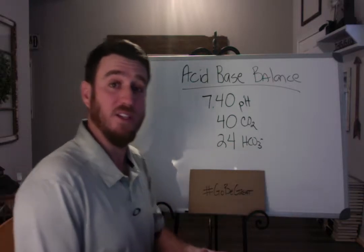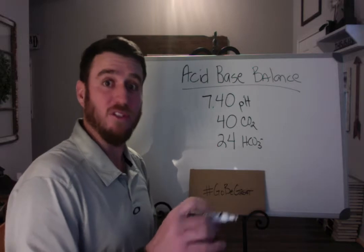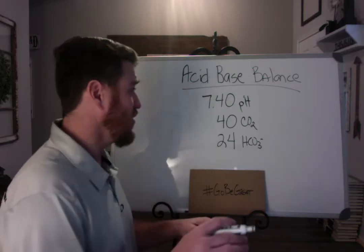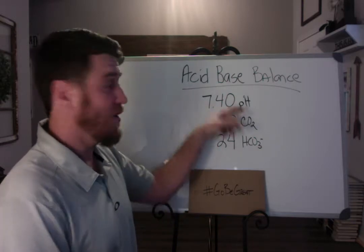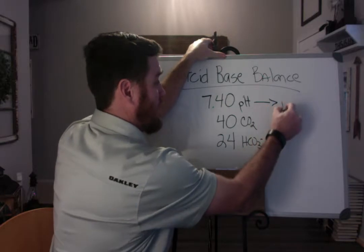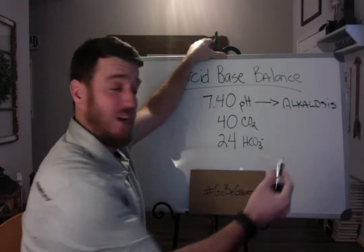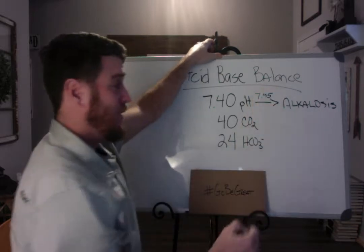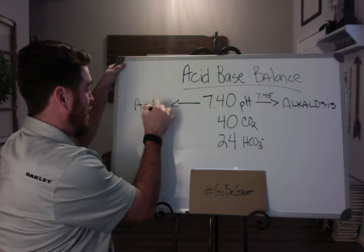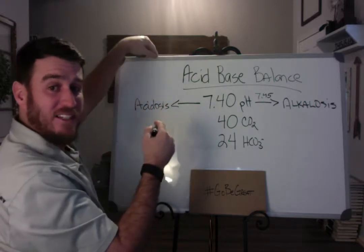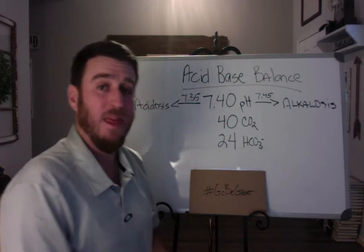Now I'm going to go through these again and give you our normal ranges — you'll have to write these down yourself. Normal pH is 7.40 as absolutely normal. Anything greater than 7.45 is an alkalosis. Anything less than 7.35 puts us in a state of acidosis. So 7.35 to 7.45 is our normal range for pH.